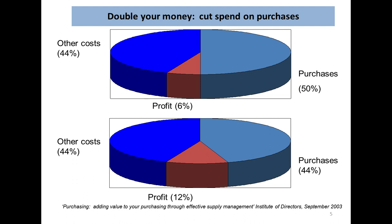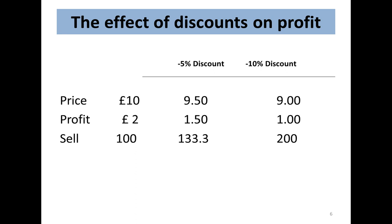This next slide, also from a buying director, shows that with 50% bought-in purchases, a 6% reduction in these goes straight to the bottom line. So why wouldn't any sensible customer do exactly this?